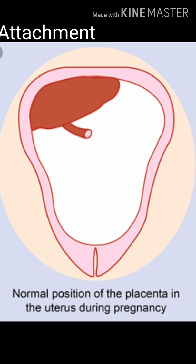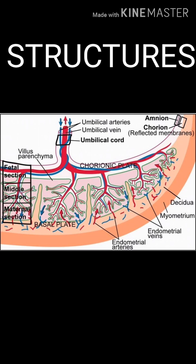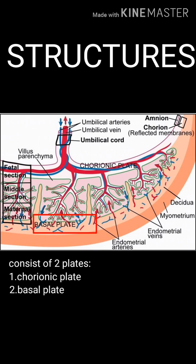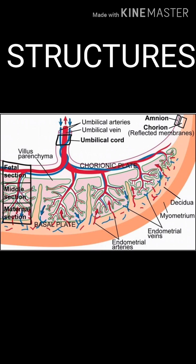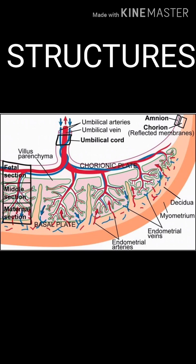Usually the placenta attaches in the upper part of the uterus and separates after the birth of the baby. The placenta consists of two plates: the chorionic plate, which lies internally and is lined by the amniotic membrane, with the umbilical cord attached to it; and the basal plate, which lies on the maternal aspect.